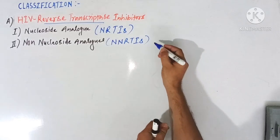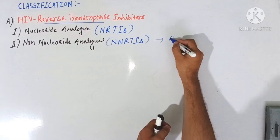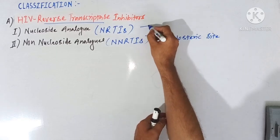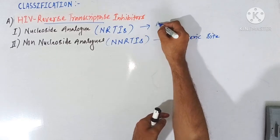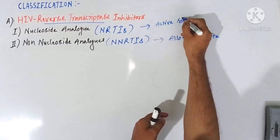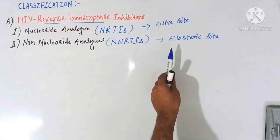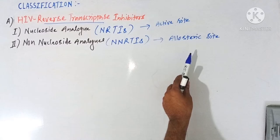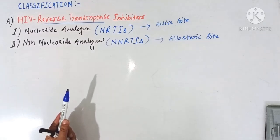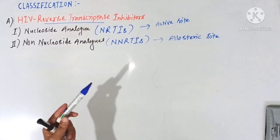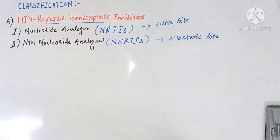So all the known nucleosides bind to the allosteric side while all nucleoside analogues bind to the active site. Binding to an allosteric site produces a conformational change in the active site of this reverse transcriptase enzyme in such a manner that it is unable to perform the catalytic activity of elongating the new viral nucleic acids.